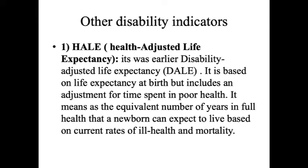An important disability indicator is HALE — Health Adjusted Life Expectancy, earlier known as Disability Adjusted Life Expectancy. It is based on life expectancy at birth but includes an adjustment for time spent in poor health — expressed as the equivalent number of years in full health that a newborn can expect to live based on current rates of ill health and mortality.